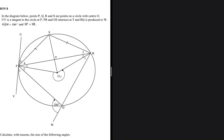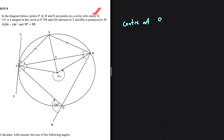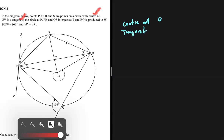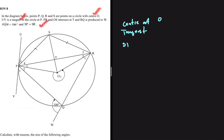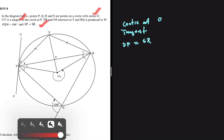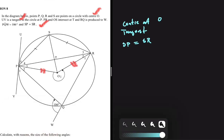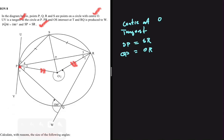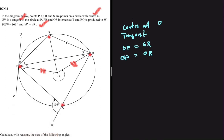From the question statement we know that our circle is centered at O, so let's write it down: we have a center at O. We also know that UV is a tangent to the circle at P. We are told that SP equals SR, and OP equals OR because they are radii. The vertices P, S, Q, R lie on the circumference of the circle, so we have a cyclic quadrilateral. This is all we need to answer all the questions that follow.